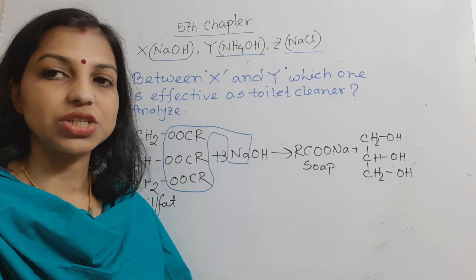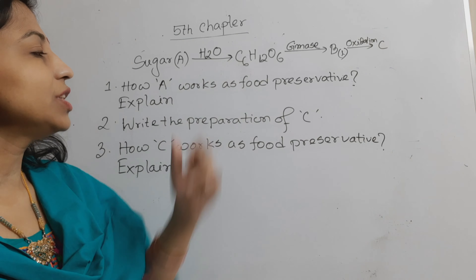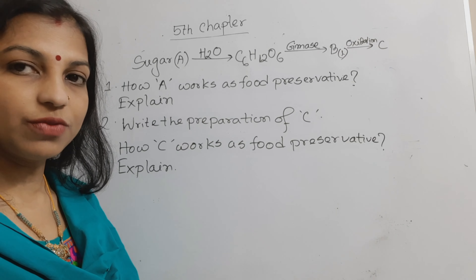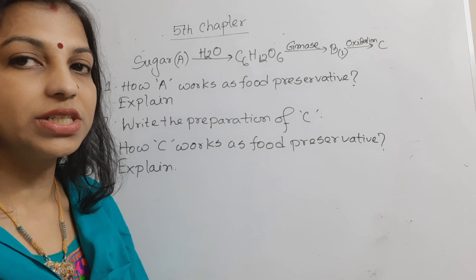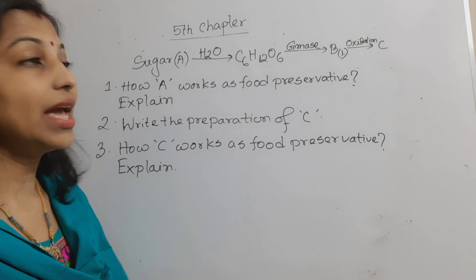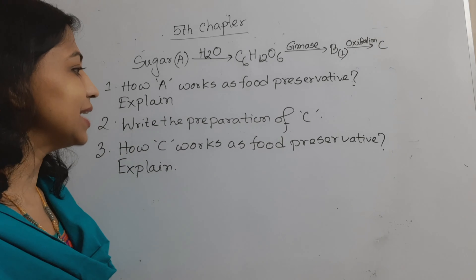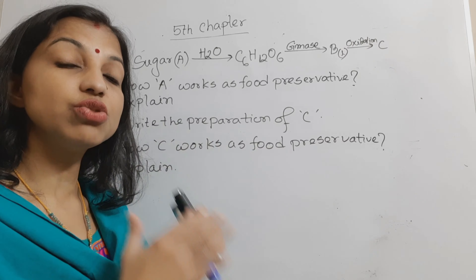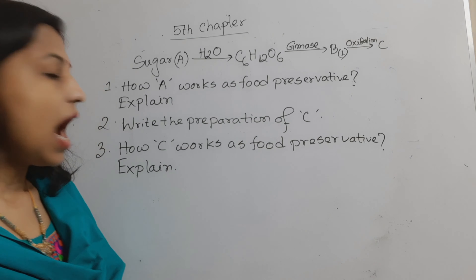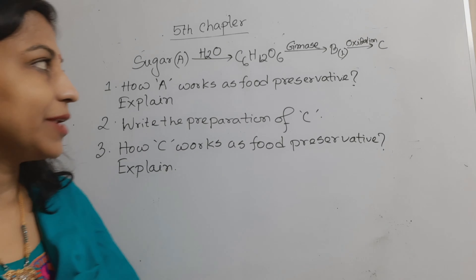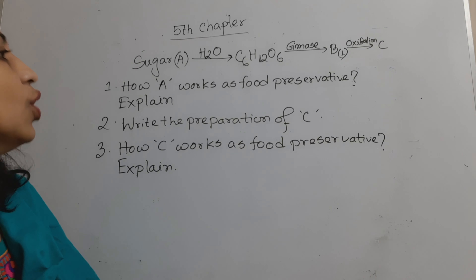Now I start our second creative question. Sugar + H₂O in the presence of enzymes is converted to C₆H₁₂O₆ (glucose), which in the presence of zymase is converted to B (a liquid), and on oxidation is converted to C. Question one: how does A work as food preservative? Question two: write the preparation of C. Question three: how does C work as food preservative?